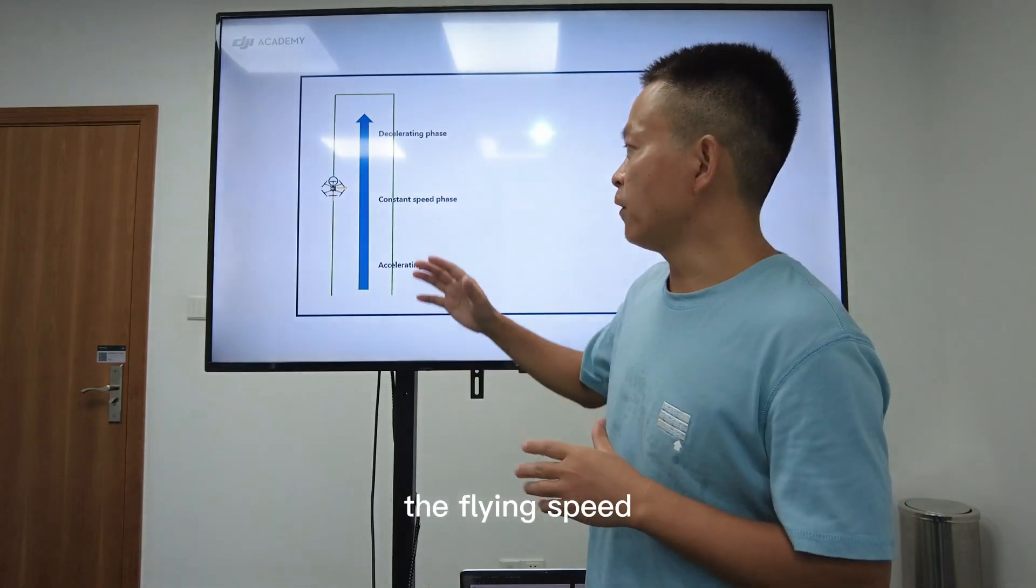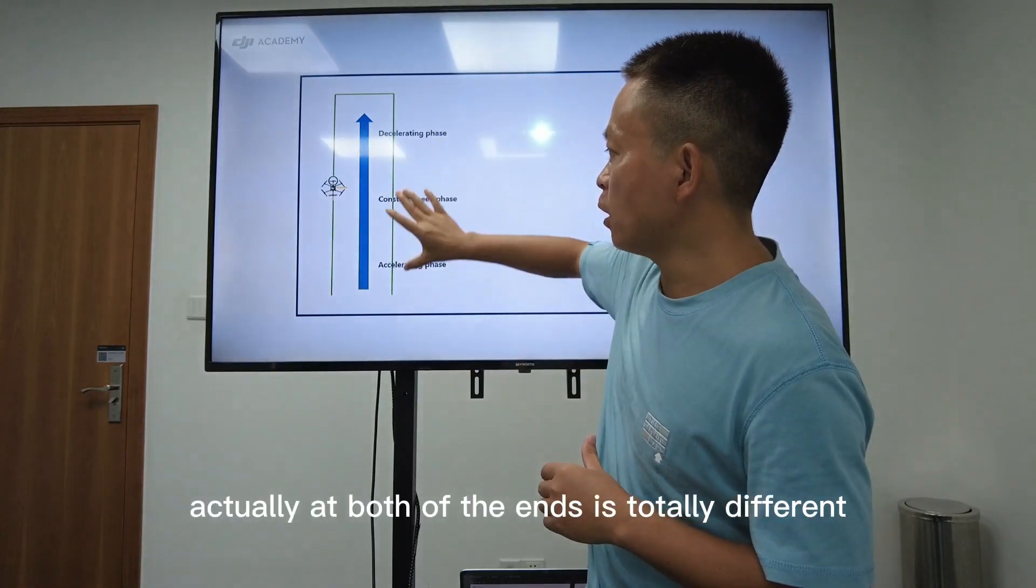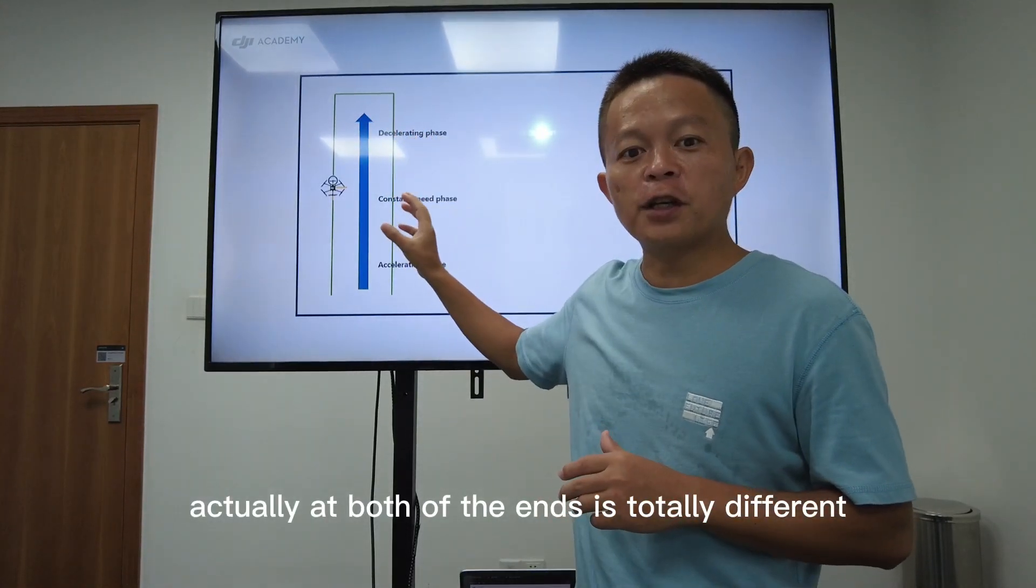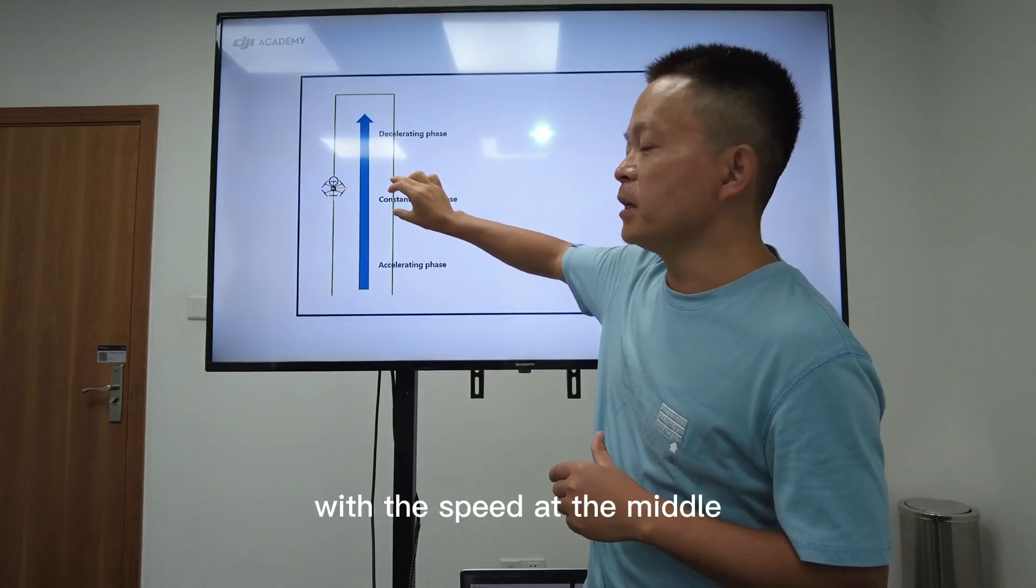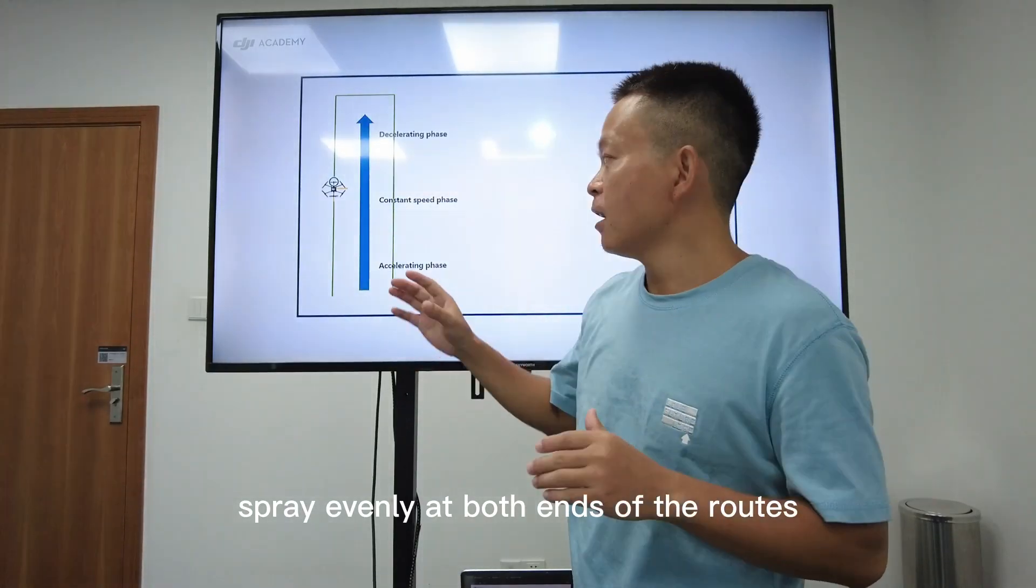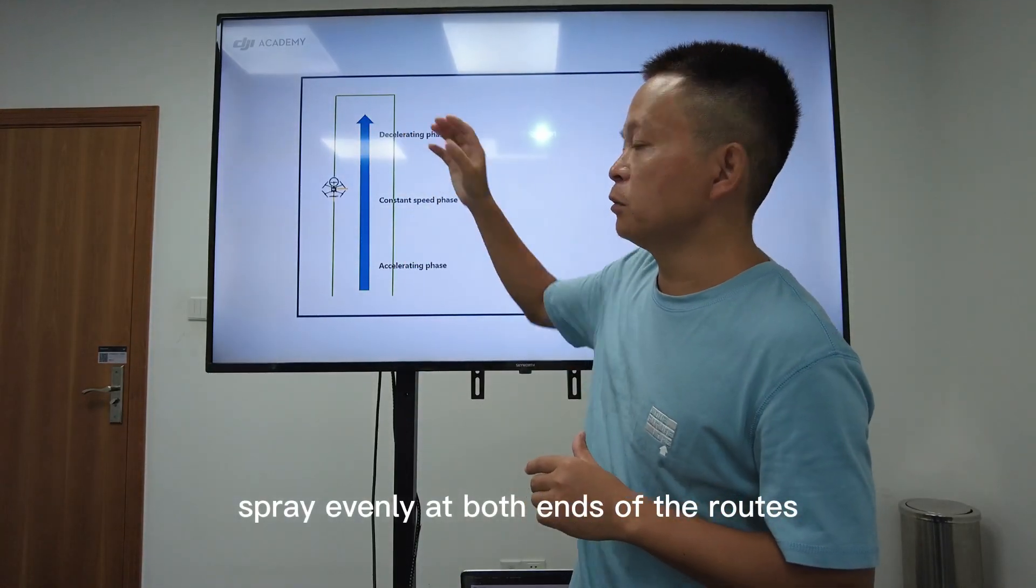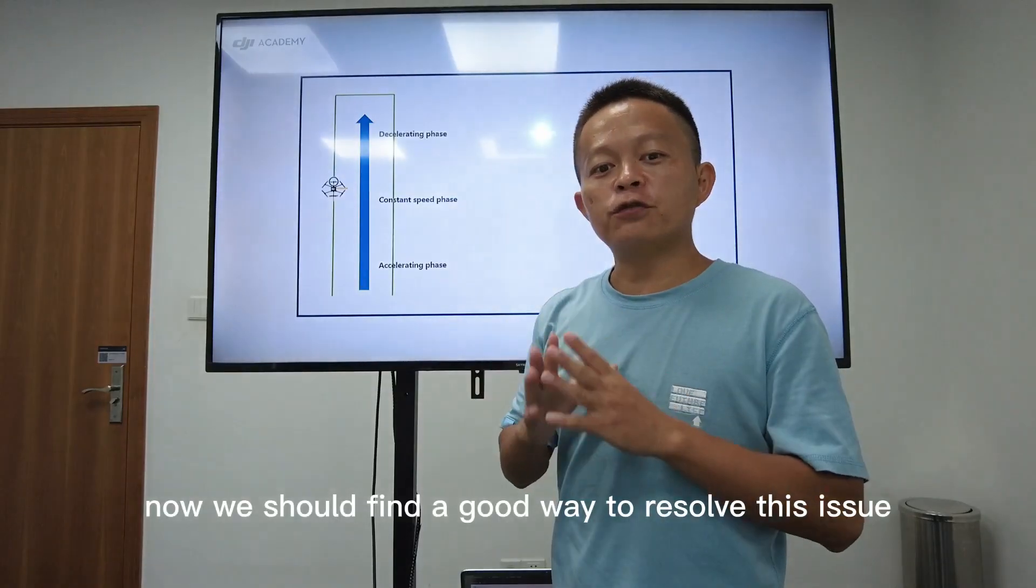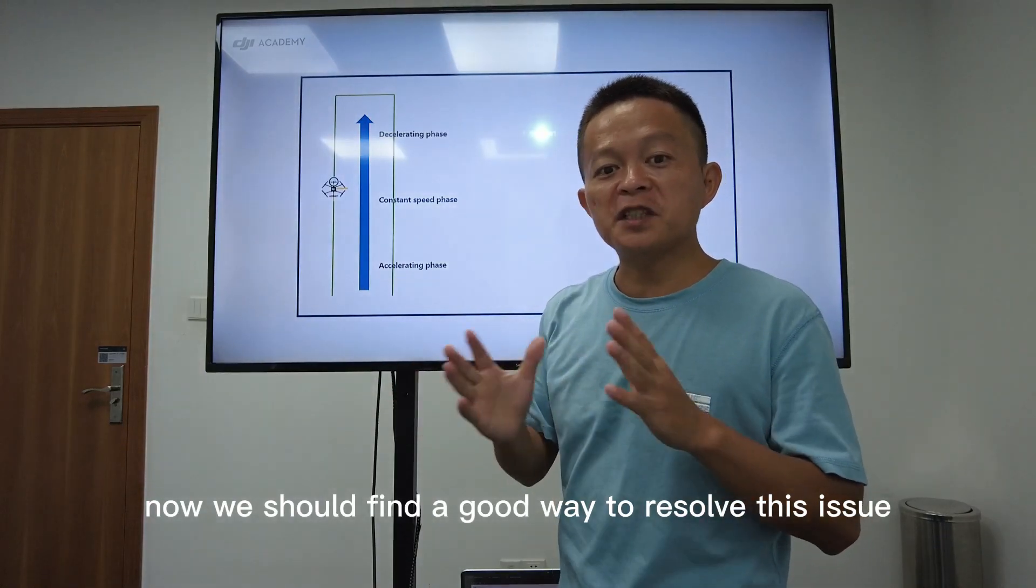So as you see, the flying speed at both of the ends is totally different with the speed at the middle. So DJI Agras could not spray evenly at both ends of the routes. Now we should find a good way to resolve this issue.